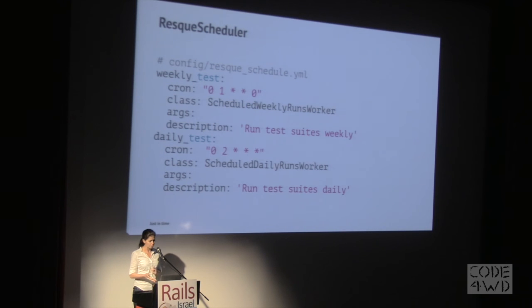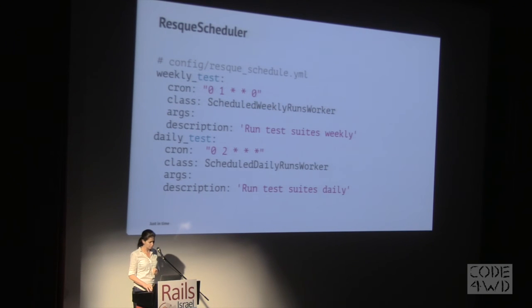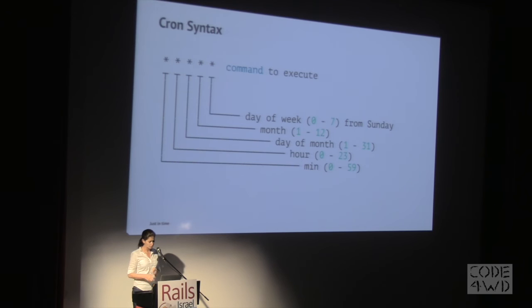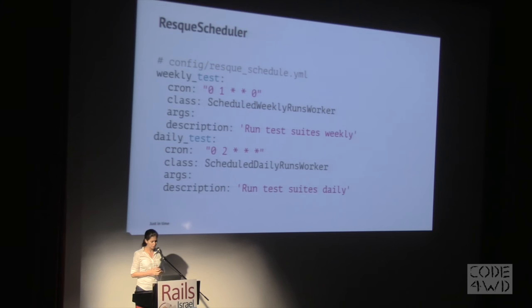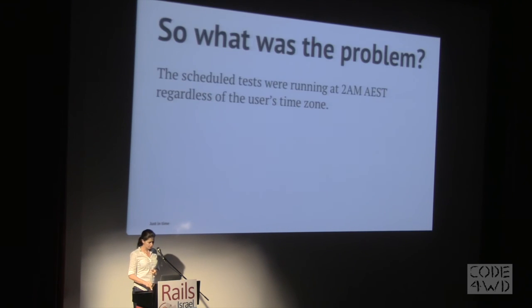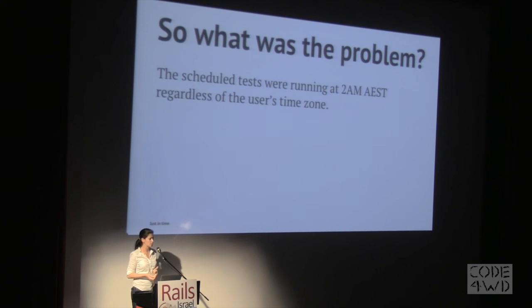The first goal: we had test suites that needed to run daily or weekly at a set time — either 1 a.m. or 2 a.m. — using Resque Scheduler. In the scheduler, we defined when they should run for weekly or daily tests using cron syntax — left to right: minutes, hours, day of the month, month, and day of the week, where 0 and 7 are Sunday. The problem: I was in Australia at the time, and the scheduled tests were running at 2 a.m. Australian Eastern time regardless of the user's time zone, which was a problem.